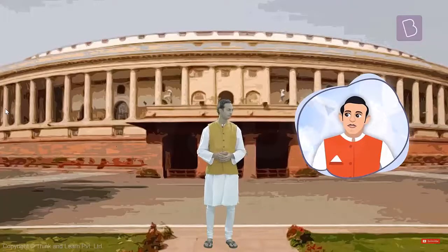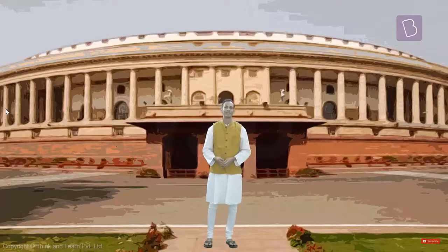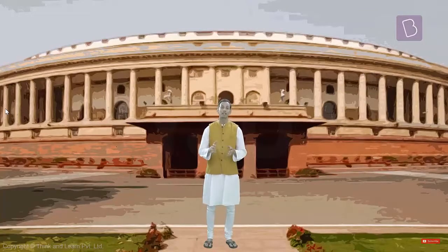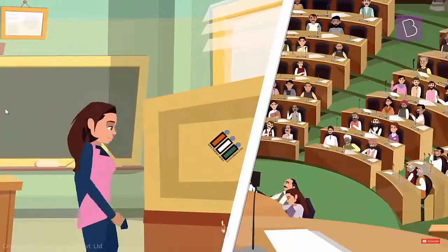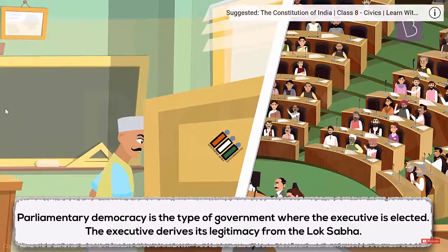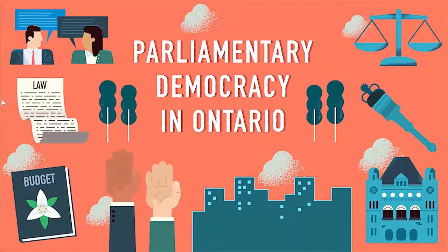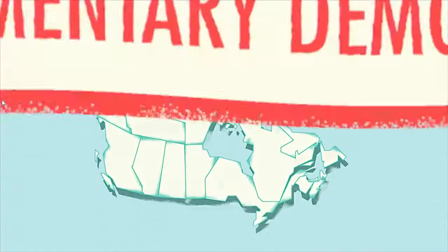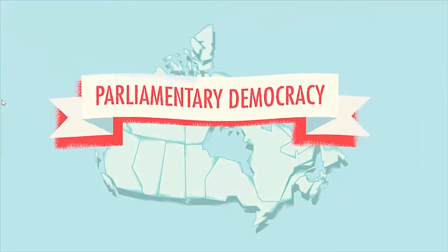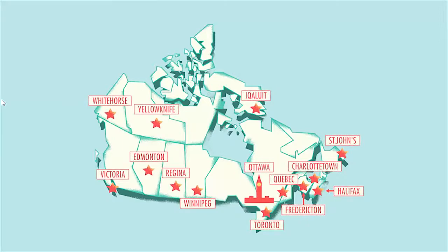But what is parliamentary democracy? A parliamentary democracy is the type of government where the executive is elected — elected, not selected. Canada is a parliamentary democracy. We elect members to represent us in our federal parliament and our provincial and territorial legislatures.